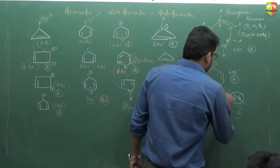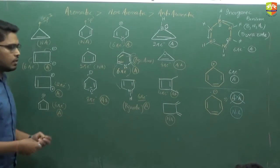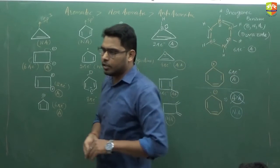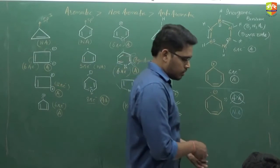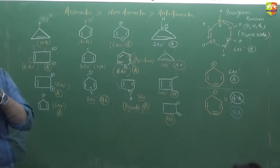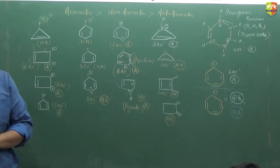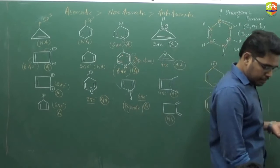Write down this one. When the molecule has 7 or more atoms present in a cyclic molecule, it will never be anti-aromatic. Because it is highly unstable, the molecule changes its plane and becomes non-aromatic.